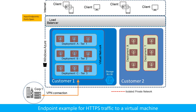For example, to allow HTTPS traffic from an Internet client to a web server in the virtual network, an input endpoint maps the public TCP port 443 to the private port 443 on the virtual machine. In this case, the load balancer is translating addresses but not ports.